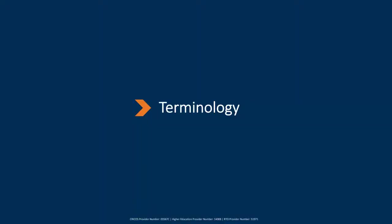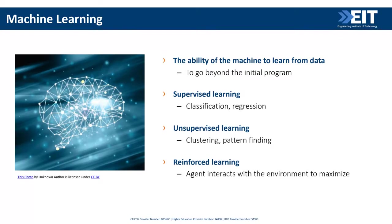Let's clarify some terms. The broad field is artificial intelligence (AI). Part of AI is machine learning (ML). Machine learning is the ability of a machine to learn from data — to go beyond any initial program — much like humans go beyond their DNA program by learning and adapting. We create a program on a computer but don't tell it exactly what to do in all cases; we let it learn.